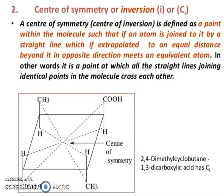Now, center of symmetry (i), also called center of inversion, is defined as a point within the molecule such that if an atom is joined to it by a straight line, an equivalent atom is found at an equal distance in the opposite direction. In other words, it is a point at which all straight lines joining identical points in the molecule cross each other. For example, 2,4-dimethylcyclobutane-1,3-dicarboxylic acid has a center of symmetry Ci.